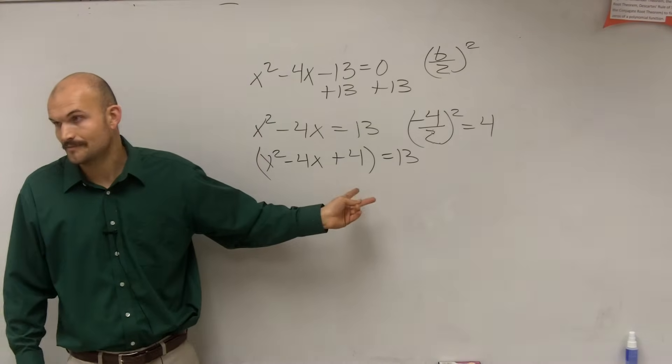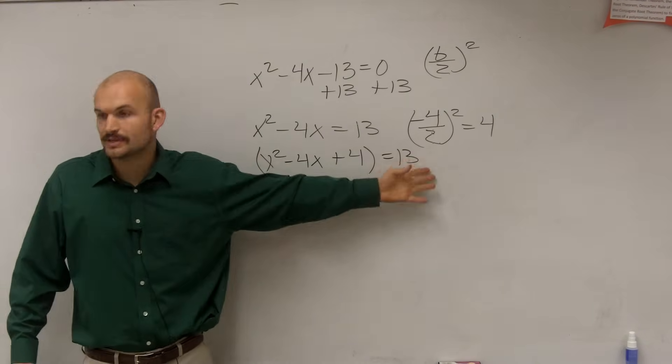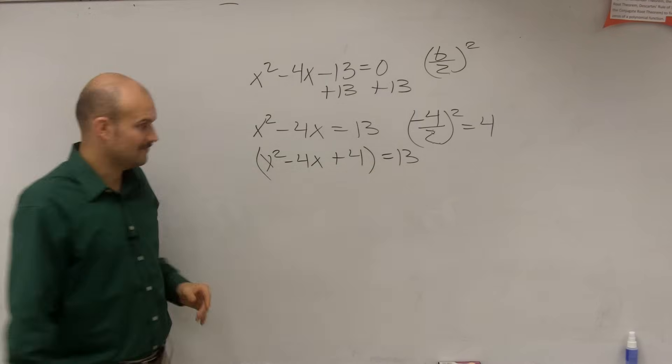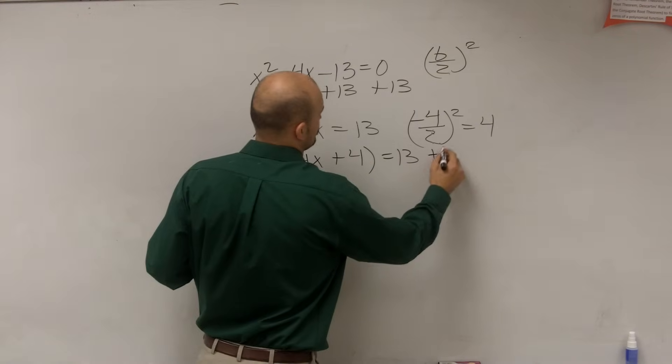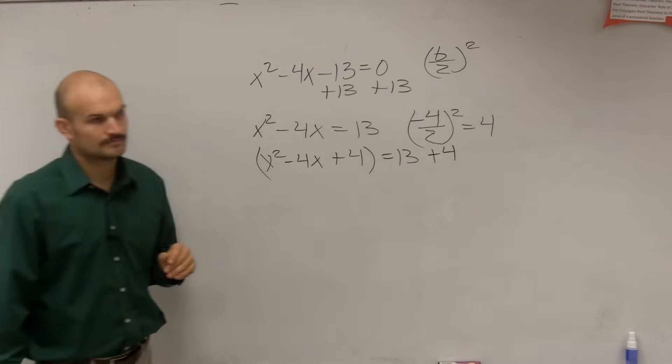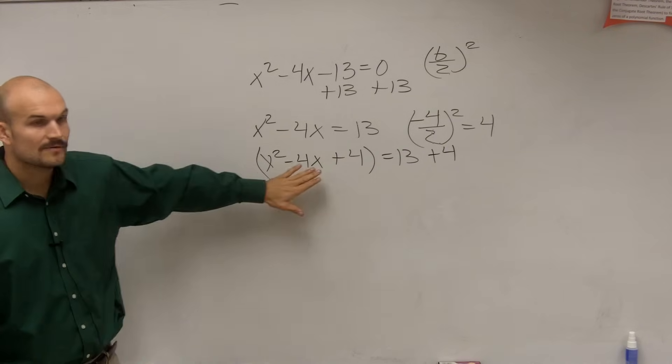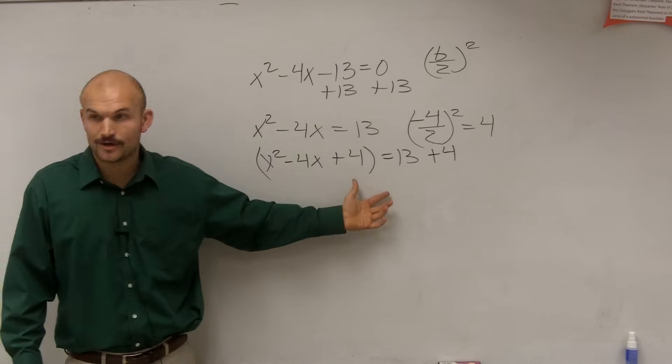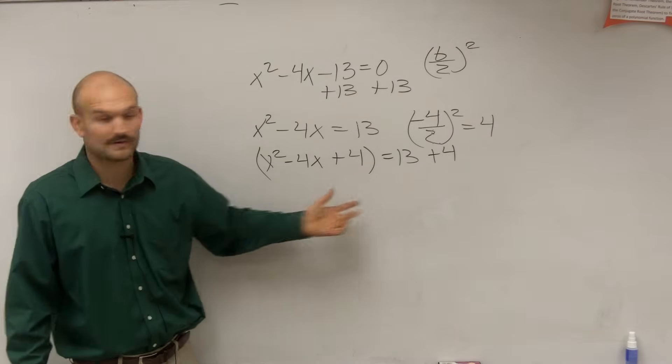So what did we do over here? We added 4. So what do you think you're going to want to do on the other side? Add 4. Now, since we created a perfect square trinomial, we can write this as a perfect square.